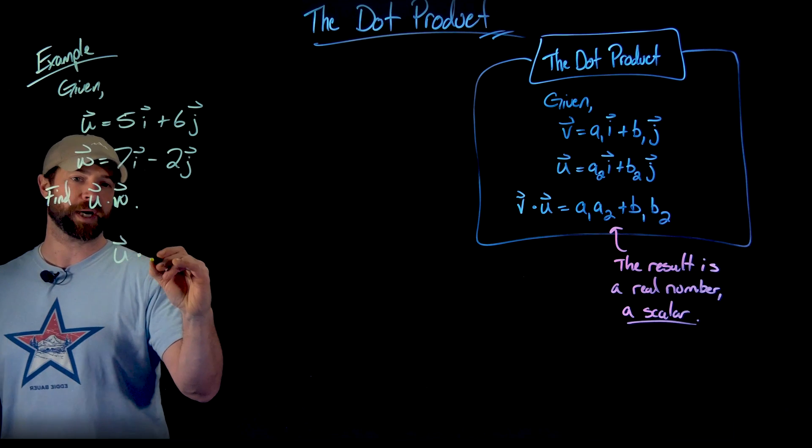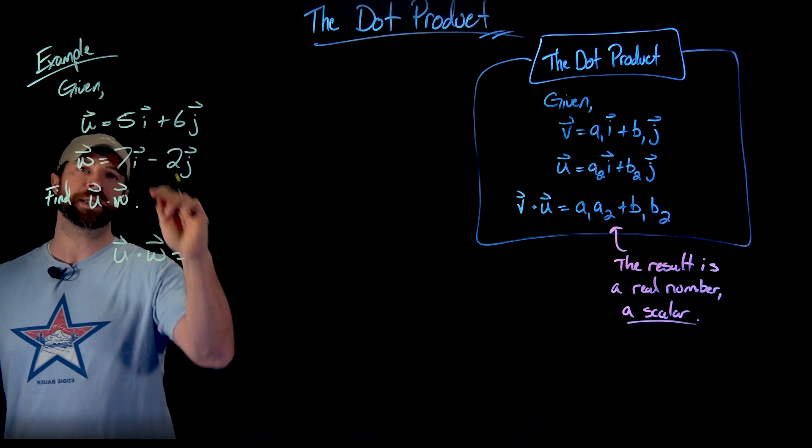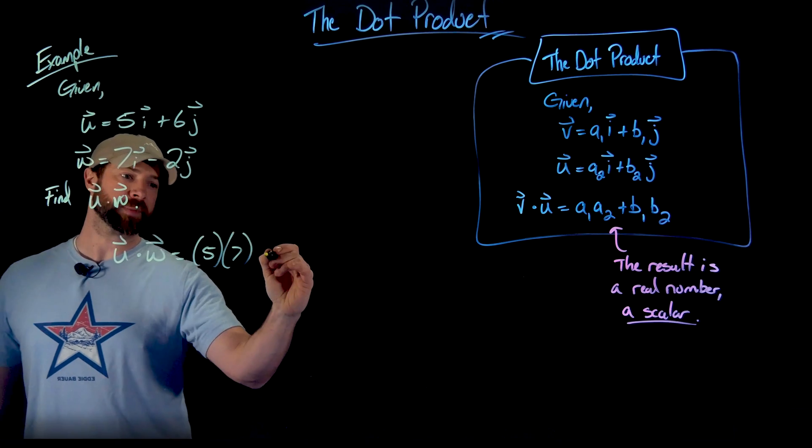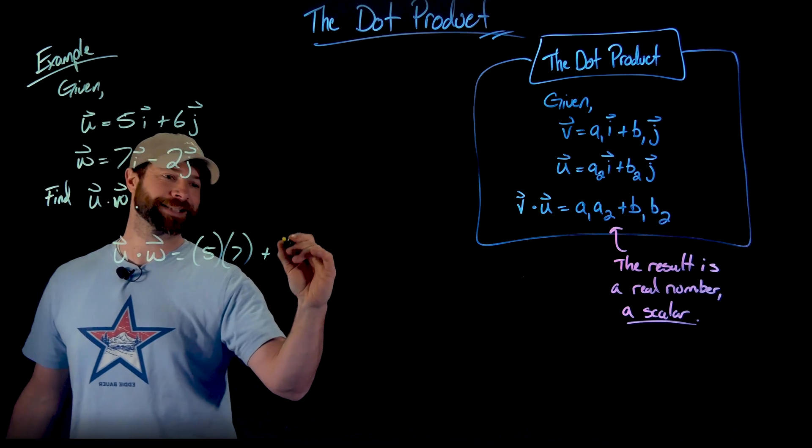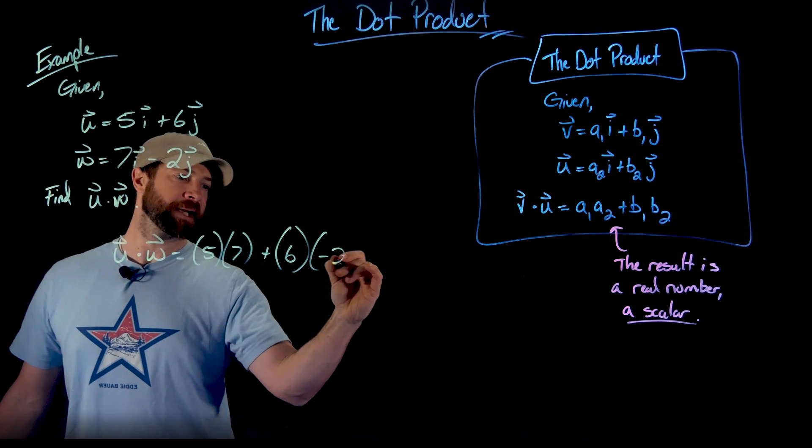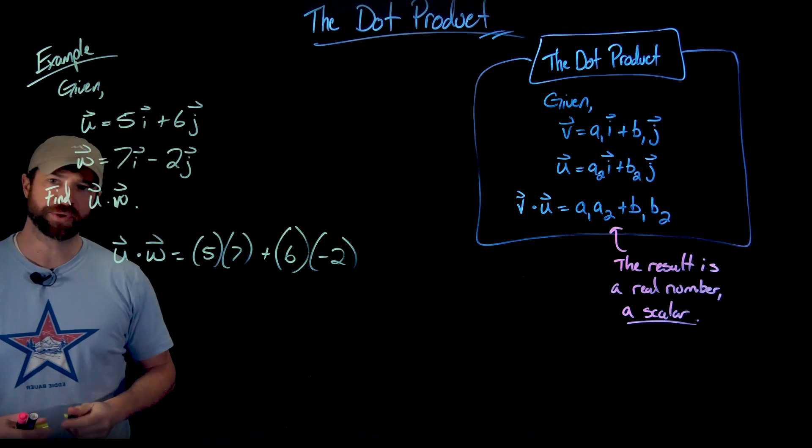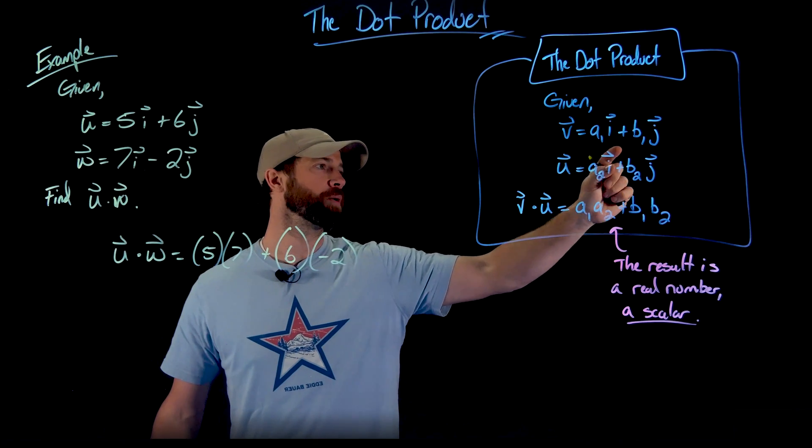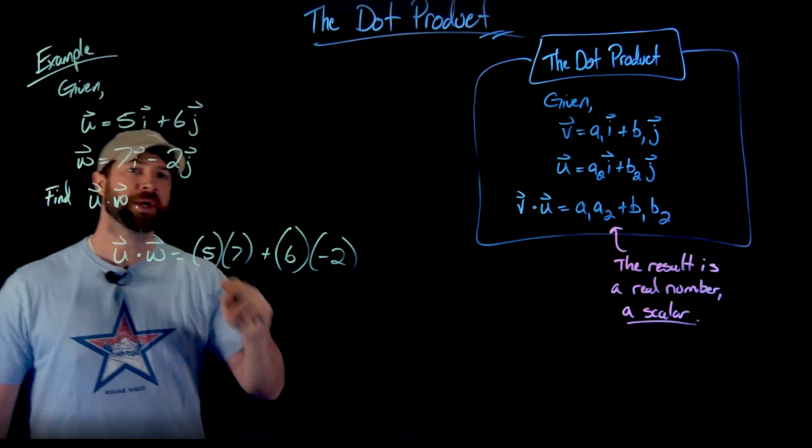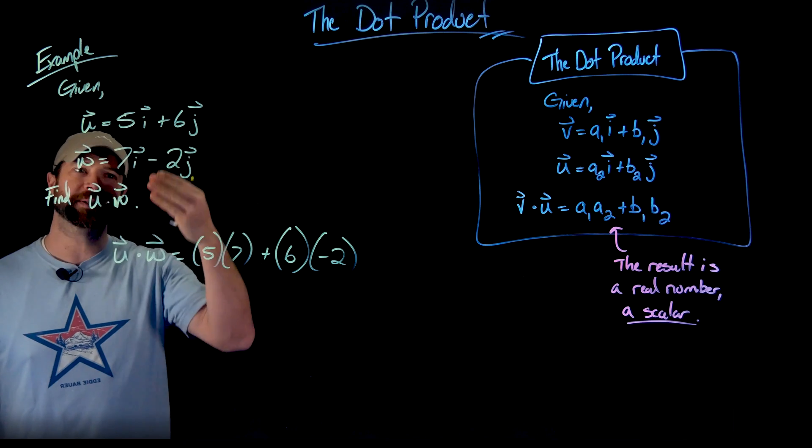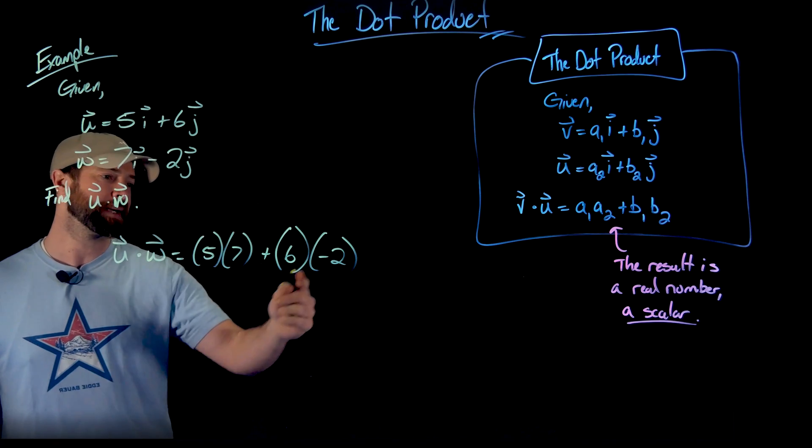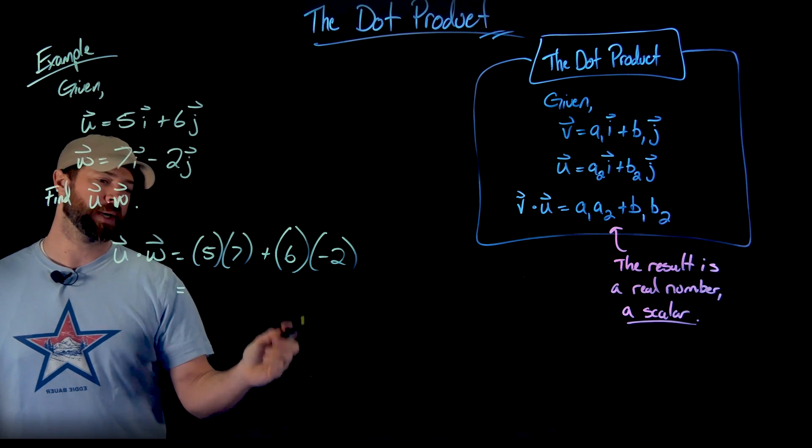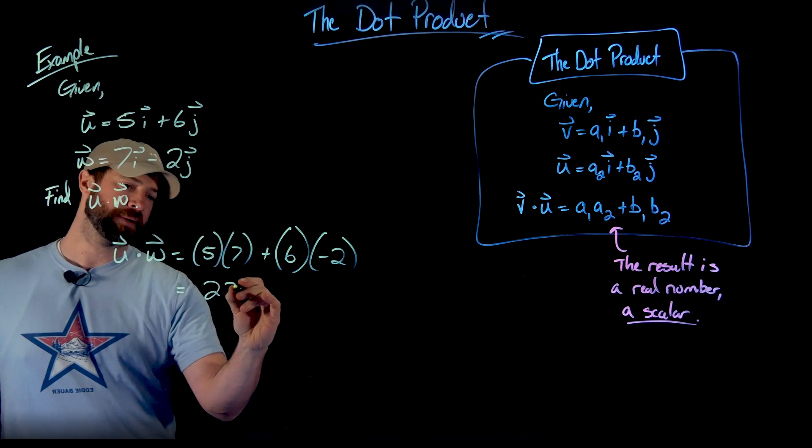So u dot w would equal 5 times 7 plus 6 times negative 2. Really, the only tricky part here is this negative 2. Importantly, in this definition, we're thinking about only addition between these terms. So if you have a negative here, we think about this as adding negative 2j. But once we do that, this is 35 minus 12, which is 23.